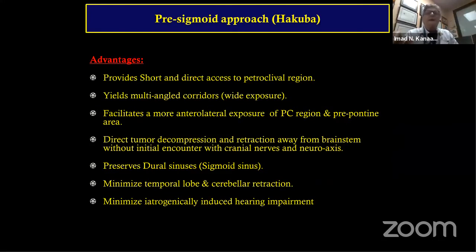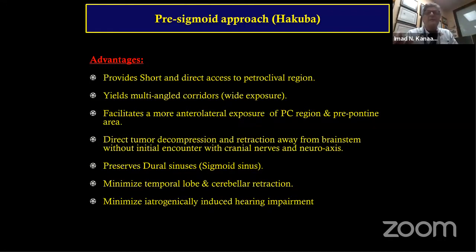The pre-sigmoid approach has many advantages: once you perform this procedure, you have major exposure from cranial nerve II down to XI. The Hakuba approach is a modification, but with these combined procedures you can spend six hours on drilling and two or three craniotomies covering the posterior fossa, pre-sigmoid, and subtemporal areas.